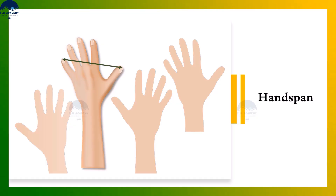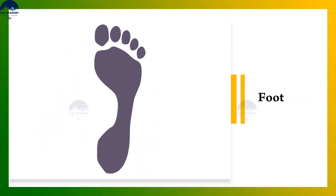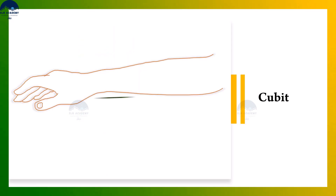Hand span is a measure of distance from the tip of the thumb to the tip of the little finger with the hand fully extended. People also used the foot as a unit of length. A cubit, the length from the elbow to the fingertips, was used in ancient Egypt and was also accepted as a unit of length in other parts of the world.